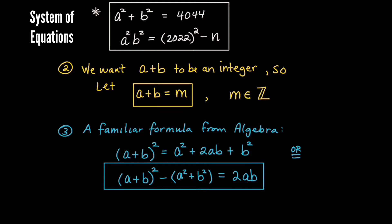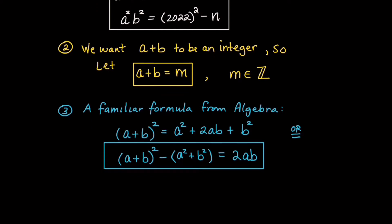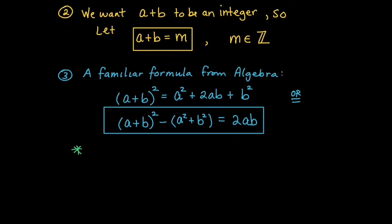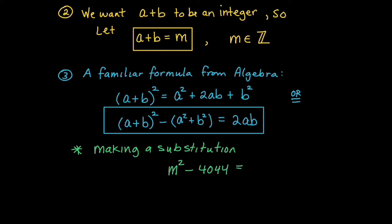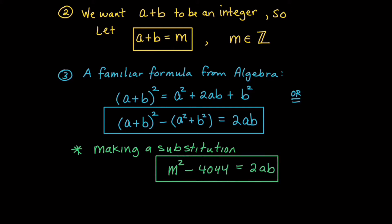Making a substitution of our integer m, as well as one of the equations from our system — a² + b² = 4044 — we get the following equation: m² minus 4044 is equal to 2ab.